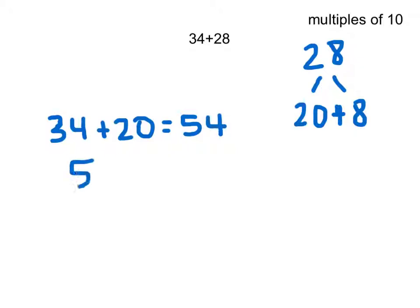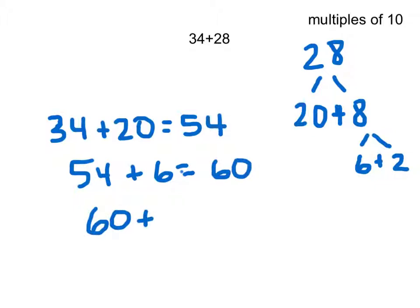Then I know that if I have 54, I can take this 8 and break it even further into 6 plus 2. Well if I use that 6 plus the 54, I know that I'm going to get to my next friendly benchmark, which is going to be 60. Then if I take 60 and I use the last 2, I know I'm going to get to 62. That's just one way of using multiples of 10 to help find the answer for double-digit addition.